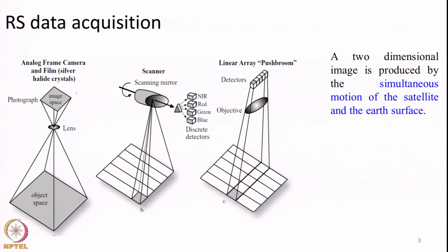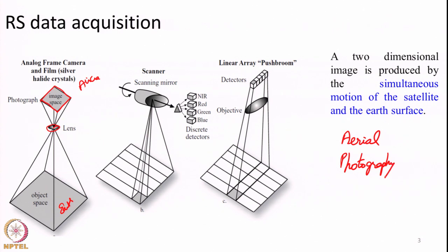Essentially the first modes of image collection were like pure analog photography. In olden days it would look something like a photographic camera put in the air with a lens; as the balloon or something moved, it would take multiple photographs of the earth surface. Later, people started putting such cameras in aircraft in order to collect what we call aerial photography. Using this, people did remote sensing based observations — what is known as photo interpretation — where by just looking at the photograph they would identify features like small urban settlements, water bodies, and so on.